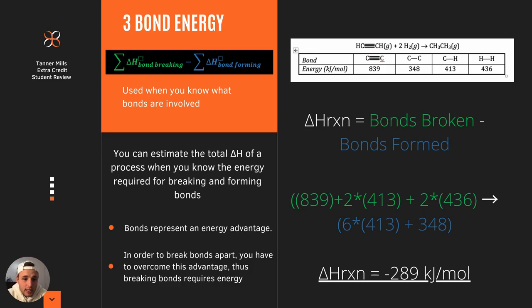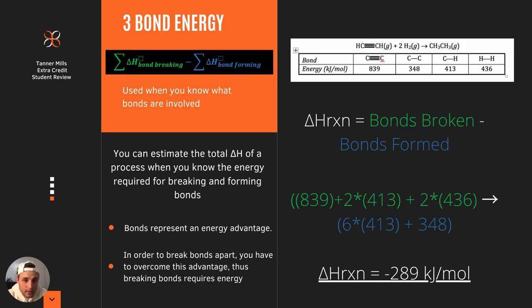Finally, the last way to calculate delta H of reaction is by utilizing bond energy. You take the sum of the delta H of bonds breaking minus the sum of the delta H of bonds forming. Remember that breaking bonds requires energy and forming bonds releases energy — it's more energetically favorable for atoms and molecules to be bonded to one another, so there is a surplus of energy released when bonds form.